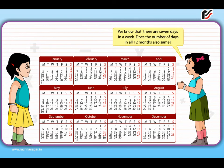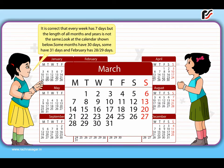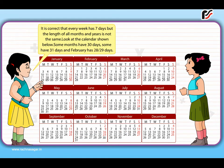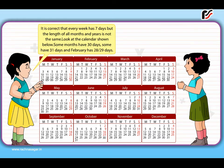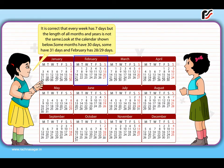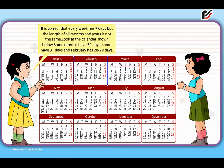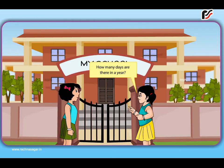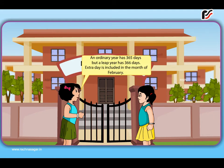We know that there are 7 days in a week. Does the number of days in all 12 months remain the same? Every week has 7 days, but the length of all months is not the same. Look at the calendar shown below. Some months have 30 days, some have 31 days, and February has 28 or 29 days. An ordinary year has 365 days, but a leap year has 366 days. The extra day is included in the month of February.